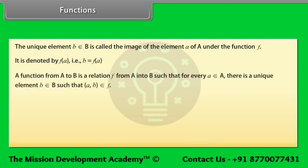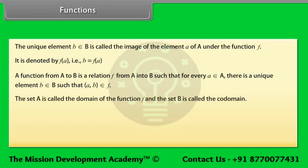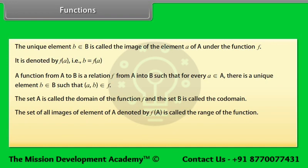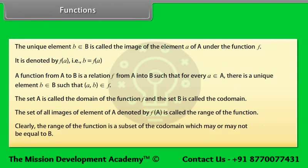A function from A to B is a relation f from A into B such that for every a ∈ A, there is a unique element b ∈ B such that (a, b) ∈ f. The set A is called the domain and set B is called the co-domain. The set of all images of elements of A, denoted f(A), is called the range of the function. The range is a subset of the co-domain, which may or may not be equal to B.